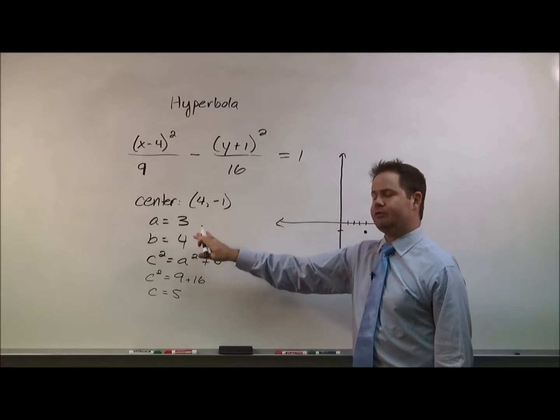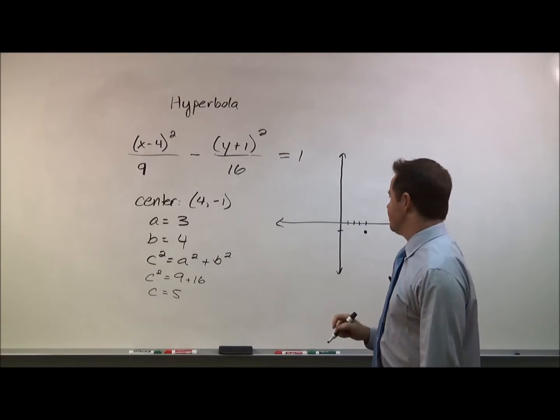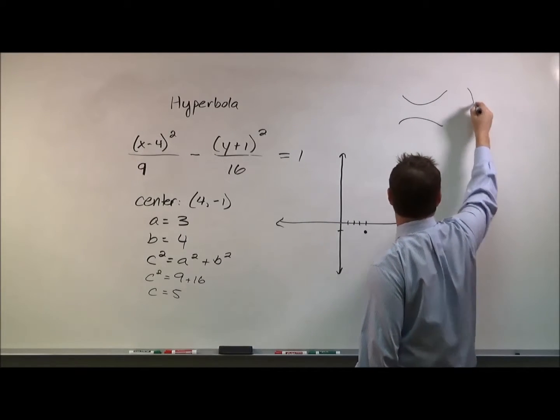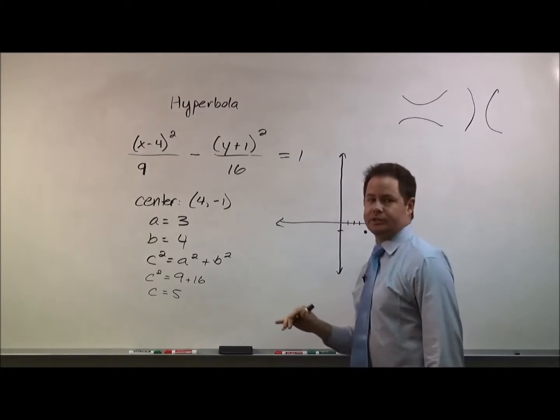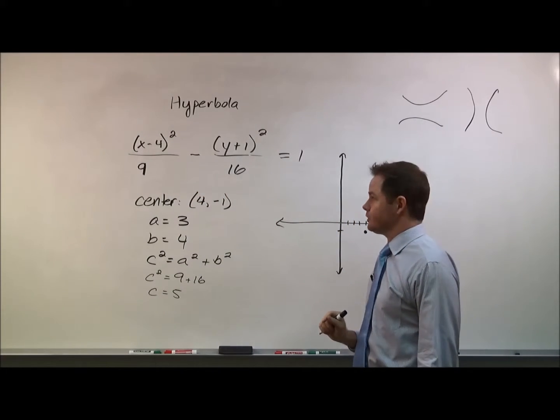And then a represents the distance between the center and the vertex of each. So hyperbolas will either look like this or like this. And that's going to be determined by what value goes first, whether you're looking at an x squared term first or a y squared term first.